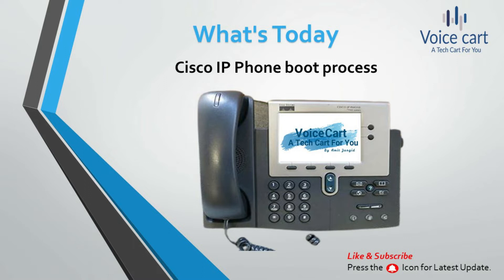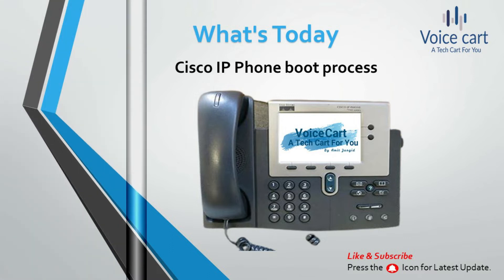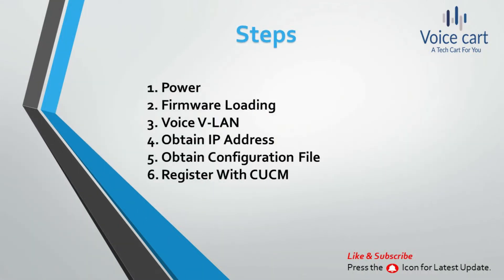Today we will see which steps occur when a Cisco IP phone starts booting up. There are six steps: the first is about power, the second is firmware loading, the third is about voice VLAN, the fourth is obtaining an IP address, the fifth is obtaining the configuration file, and the last step is registering with CUCM — Cisco Unified Call Manager.